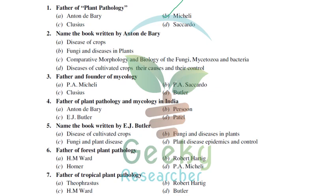The book written by Anton de Bary is 'Comparative Morphology and Biology of Fungi, Mycetozoa and Bacteria,' published in German in 1866. He also wrote on ferments, bacteria, lectures on bacteria, mildews, and fermentation, but the most famous book is 'Comparative Morphology and Biology of Fungi, Mycetozoa and Bacteria.'